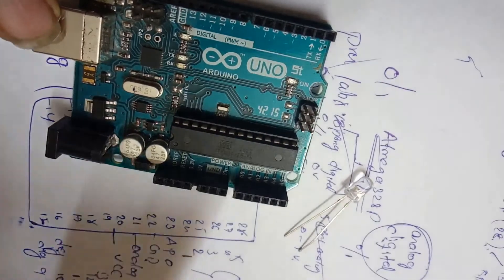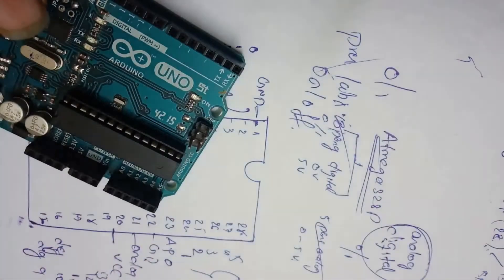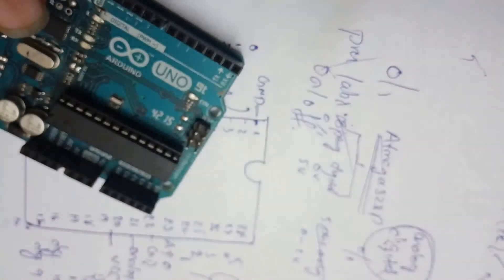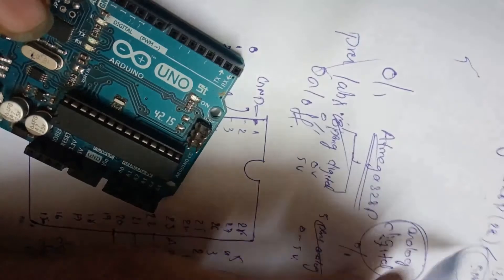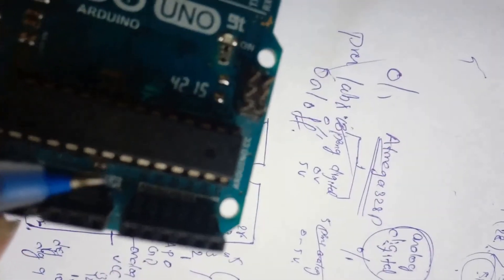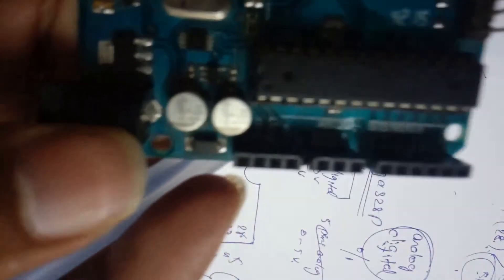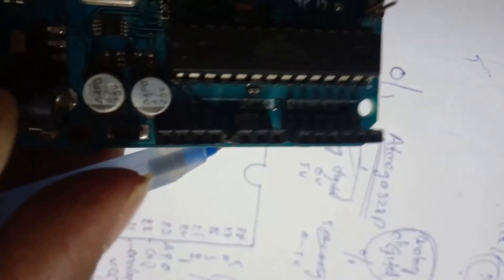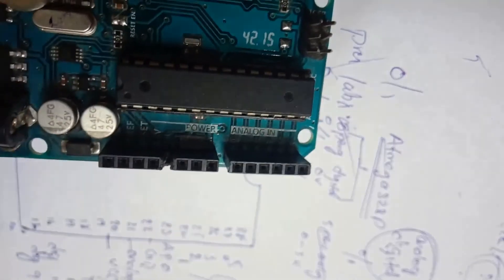To control motors like servo motors or any other DC motors, we use analog pins, 5 pins: A0, A1, A2, A3, A4, A5.